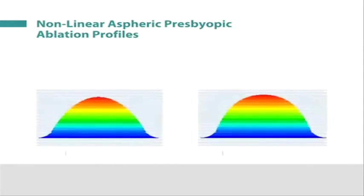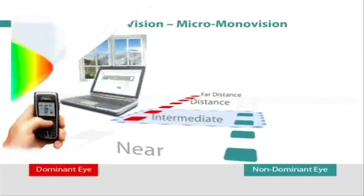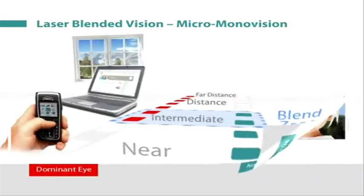In summary, the use of nonlinear aspheric profiles that increase the depth of field of each eye enables the difference between eyes to be greatly reduced, increasing tolerance.